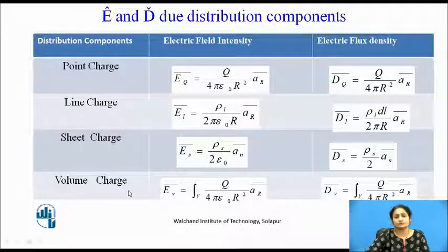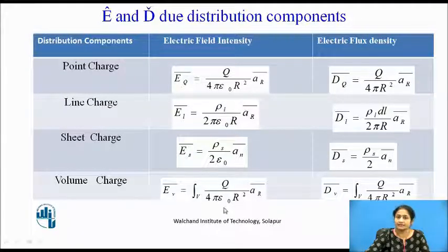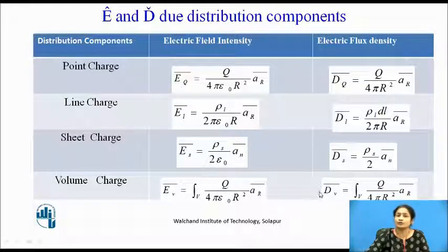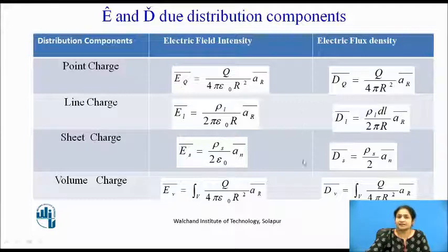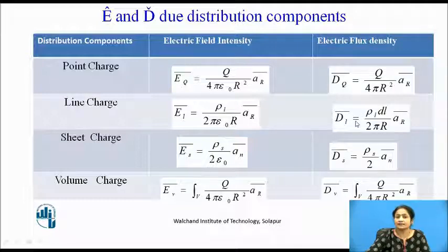For volume charge distribution, the electric field intensity over the volume is given by the integral over the volume of Q / (4πr²) · ār. Moving ε₀ to the left-hand side gives the electric flux density due to volume charge distribution: D̄V = ∫∫∫ Q / (4πr²) · ār dv. These equations are derived in previous videos. Using these relationships, you can determine the values of D̄Q, D̄L, D̄S, and D̄V.